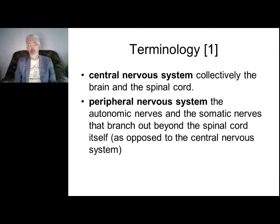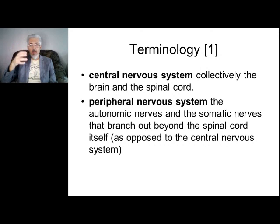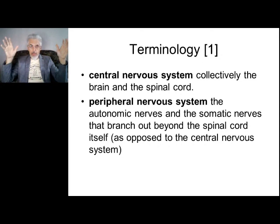Now let's discuss macroanatomy. The CNS — central nervous system — consists of the brain and spinal cord. The peripheral nervous system consists of autonomic nerves and somatic nerves — everything beyond the spinal cord. Brain and spinal cord is the CNS; all other nerve tissues beyond them constitute the peripheral nervous system.